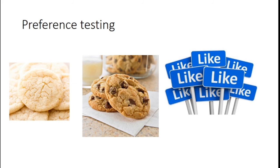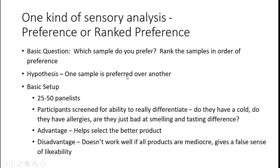Last but not least, preference testing. There is real utility here: you take your different products and ask 'which one do you prefer out of our chocolate chip prototypes?' If we're selling a chocolate chip cookie, people are very likely to prefer the one that actually looks like one. Preference testing can be paired comparison — which of these two do you prefer — or ranked preference, where you rank samples in order of preference.